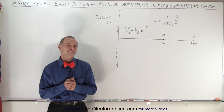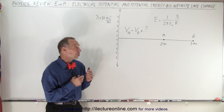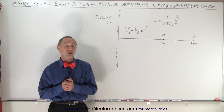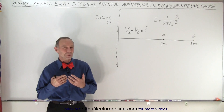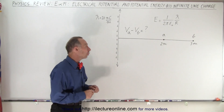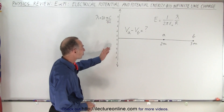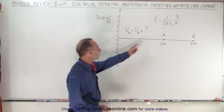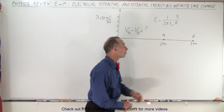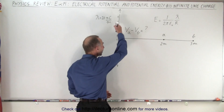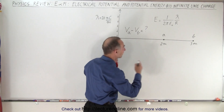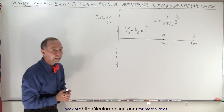Welcome to my lecture online. We're going to look at an infinite line of charge, where we have to work things a little bit differently. What we know for an infinite line of charge is that the electric field is equal to one over two pi epsilon-naught times the linear charge density divided by the distance away from the line.